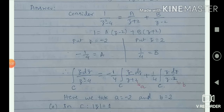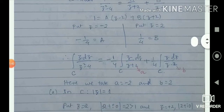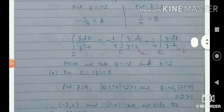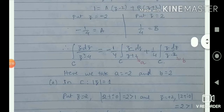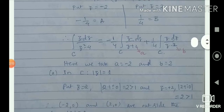To apply Cauchy's Integral Formula, we have to identify the form f(z) divided by z minus a. In the first integral, f(z) is z and a is minus 2. In the second integral, f(z) is z and a is plus 2. I have taken minus 2 as 'a' and plus 2 as 'b' for convenience. I have to apply Cauchy's Integral Formula separately for these two integrals. Before that, we have to verify whether the point minus 2 is inside the given region, as well as whether plus 2 is inside.